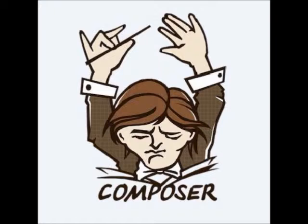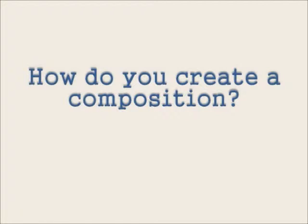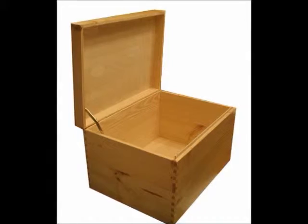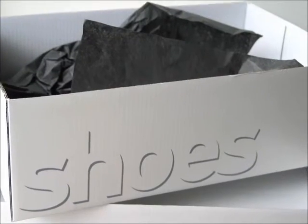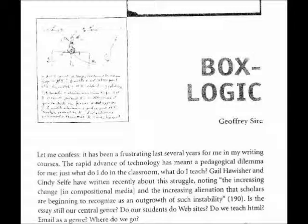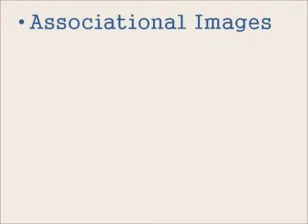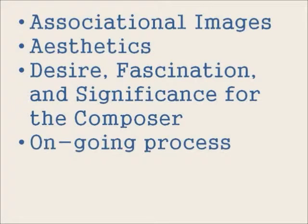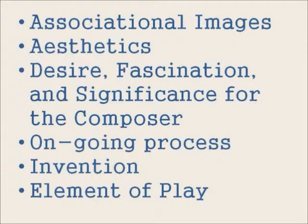But how does one compose then? How do you create a composition? Cirque likes boxes over essays, and I'm with him there — I love boxes, especially shoeboxes. But sadly, it's not just any old box; it's the formation and the ideas in the box that matter. Some of the concepts Cirque advocates for in a composition are: associational images, aesthetics, desire, fascination and significance for the composer, an ongoing process, invention, and an element of play.